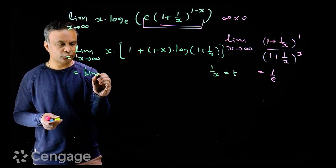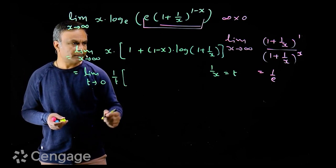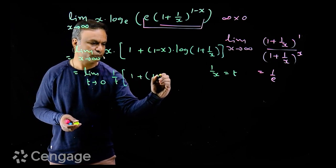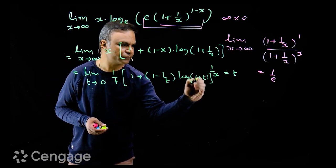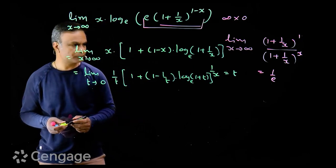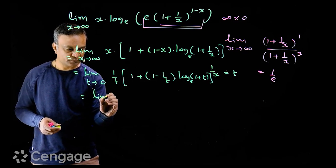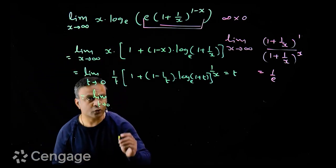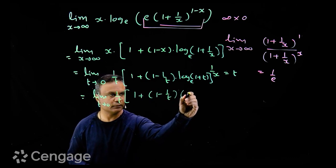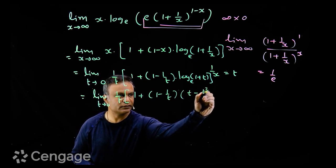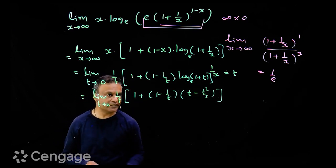So this limit changes to the new variable t: limit as t tends to 0 of 1 upon t multiplied by the bracket. Inside that bracket we have 1 plus 1 minus 1 upon t multiplied by log of (1 plus t). The base of the logarithm is e throughout. Now we use the expansion of log(1 plus t), giving us limit t tends to 0 of 1 upon t multiplied by 1 plus 1 minus 1 upon t times (t minus t squared over 2 and so on). We use the expansion up to the t squared term.